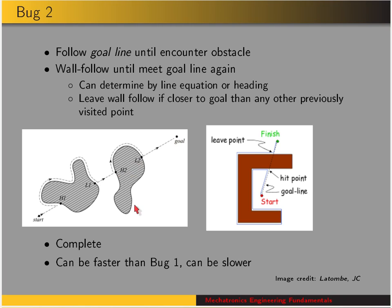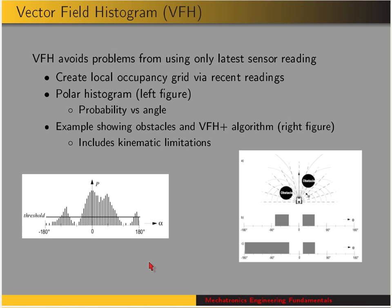Here's another example: goal seek, wall follow, until reaching the goal line, then goal seek again. This method can be faster than bug one, but it can also be slower — it just depends on the situation, meaning the environment or the map.